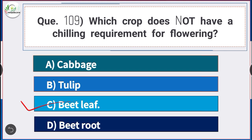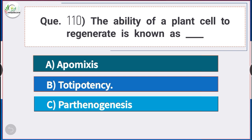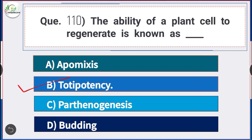Question number 110: The ability of a plant cell to regenerate is known as — answer option B — totipotency. The ability of a plant cell to regenerate is known as totipotency.